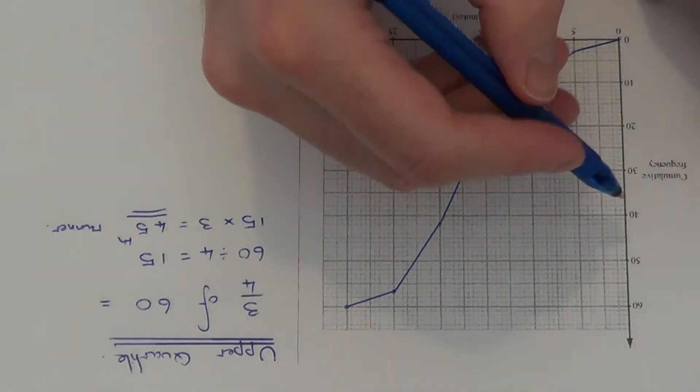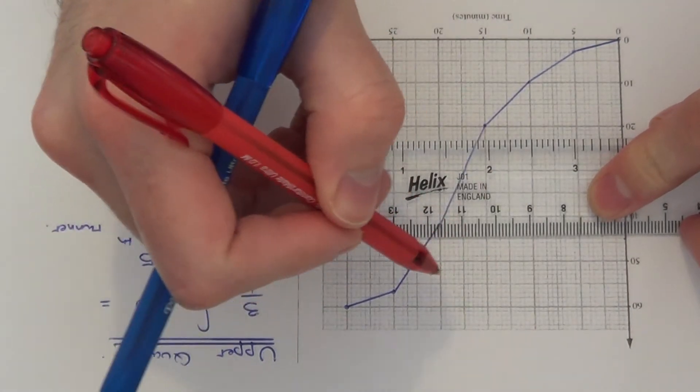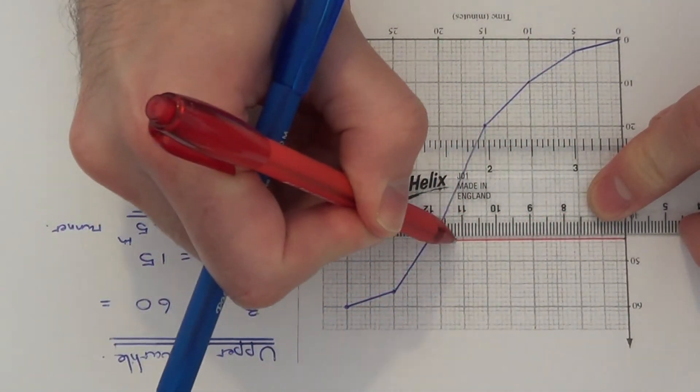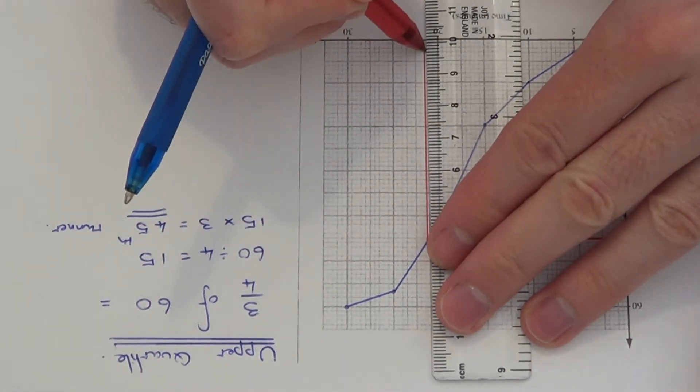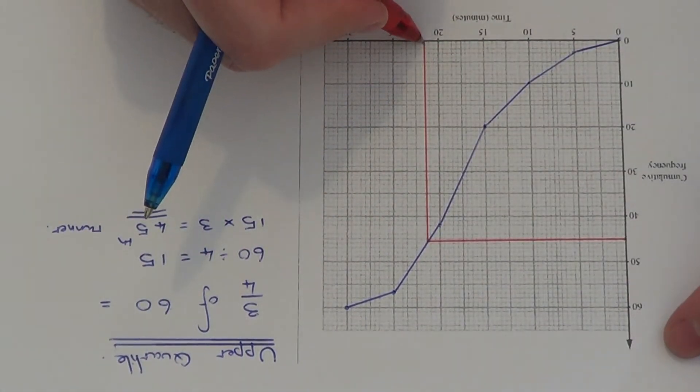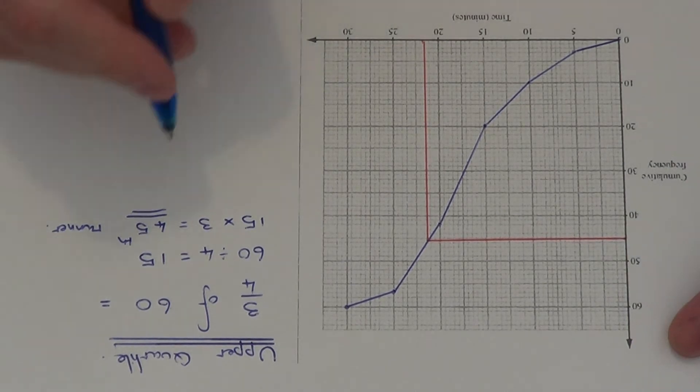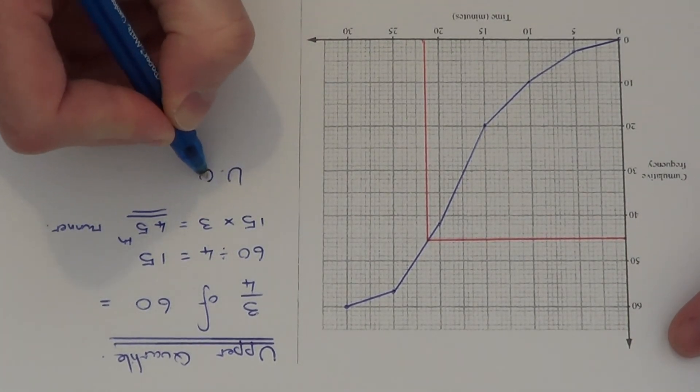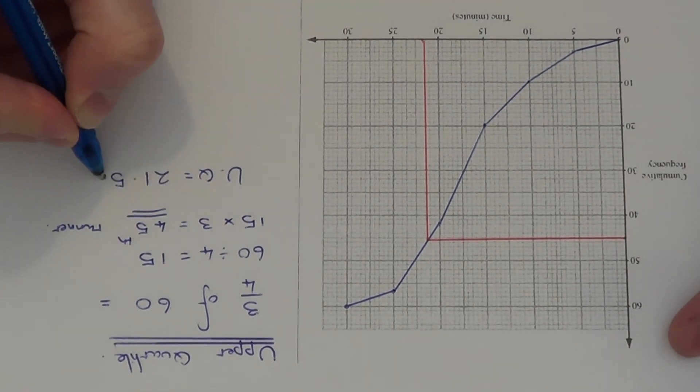So if we look for 45 on our cumulative frequency which is here. So if we draw a line across to our graph and draw a line downwards. So if we just read off this value here we get 21.5. So the upper quartile is 21.5 minutes.